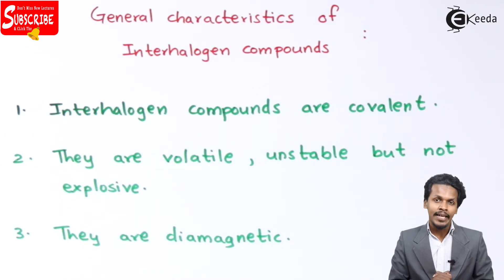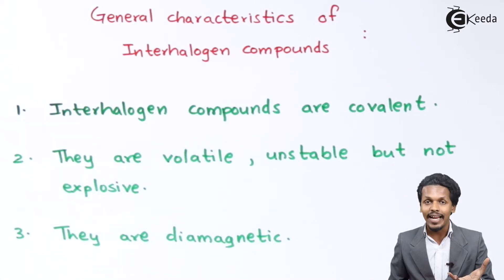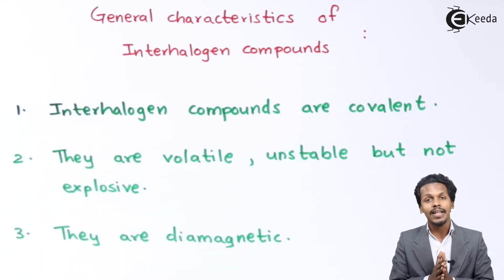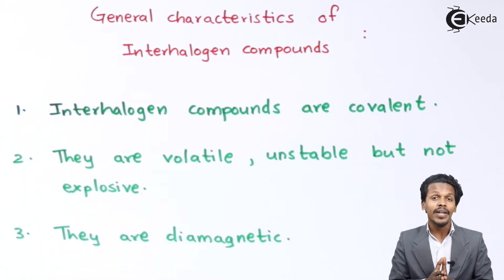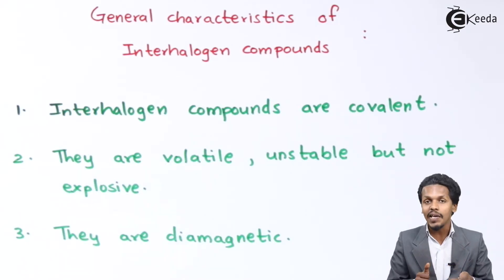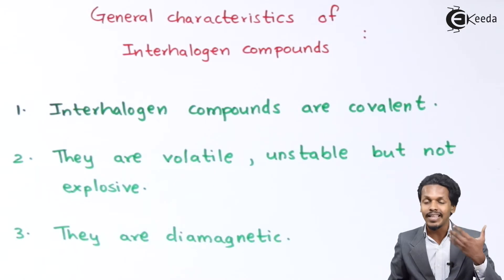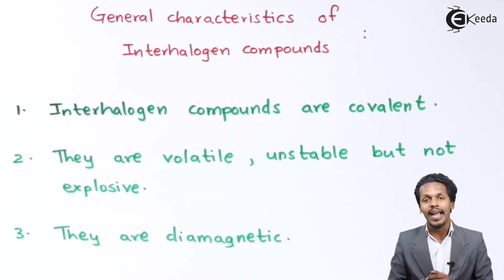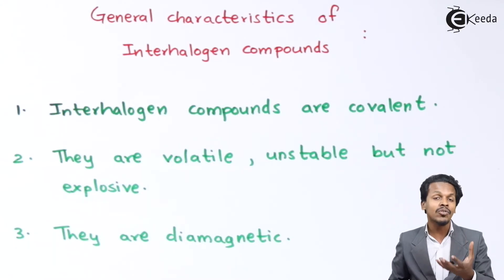Now let me talk about the chemical reactions. It has been found that interhalogen compounds are very much reactive compared to hydrogen halides. The reason is that they have weaker bonds of attraction between the two halogen atoms, which makes bond breaking very easy, and that is why they are much more reactive compared to the other hydrogen halides.